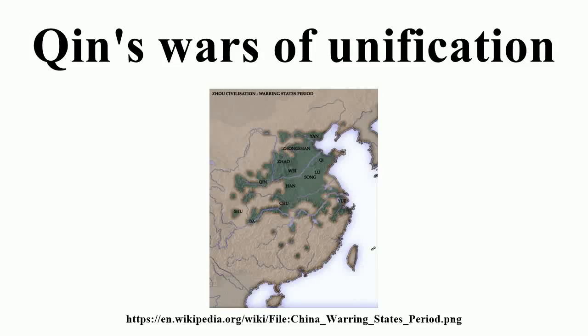Qin's Wars of Unification were a series of military campaigns launched in the late 3rd century BC by the Qin state against the other six major states — Han, Zhao, Wei, Chu and Qi — within the territories that formed modern China. By the end of the wars in 221 BC, Qin had unified most of the states and occupied some lands south of the Yangtze River. The territories conquered by Qin served as the foundation of the Qin dynasty.